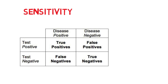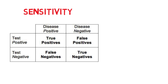For sensitivity, if you have a disease and your test is positive and your disease is positive as well, that's a true positive. If your disease is negative but the test came back positive, that's a false positive. If your disease is positive but the test came back negative, that's a false negative. And then you have your true negative.